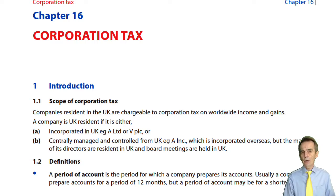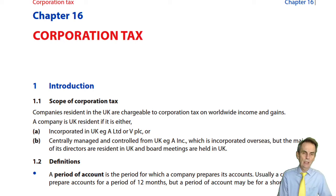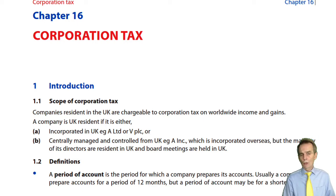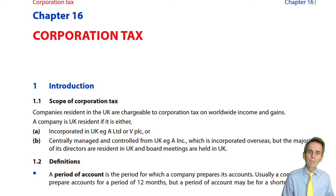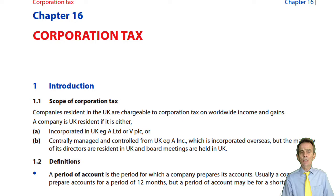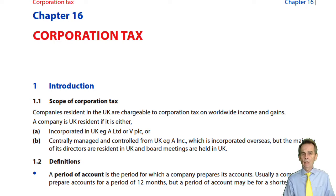The corporate tax computation combines both the sources of taxable income - mostly trading, but we could have interest income or property income as well. However, what you won't see is dividend income. When a dividend is received by a company from another company, paid out of its taxed profits, that dividend is not further charged to corporation tax in the hands of the recipient company.